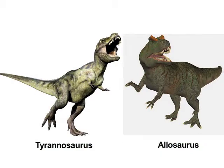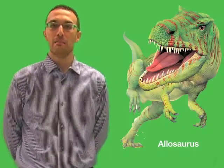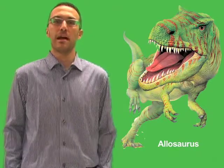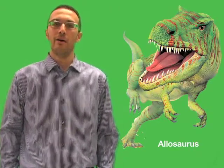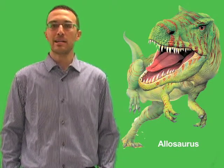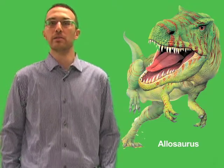In many ways, Allosaurus was a lot like Tyrannosaurus. Although Tyrannosaurus lived nearly 100 million years later, the dinosaurs had very similar builds, and both were very large, powerful, meat-eating dinosaurs that ruled their environments. In fact, in the past, many scientists thought Allosaurus was an ancestor of Tyrannosaurus. However, scientists now know that they are not closely related.